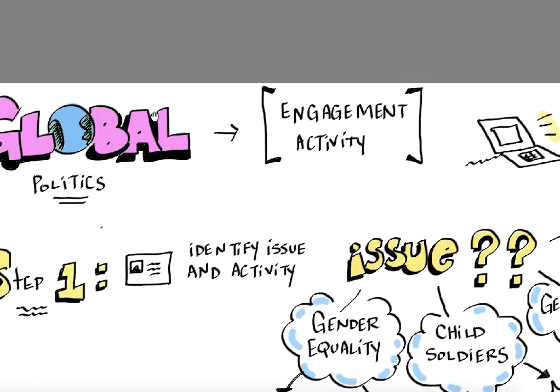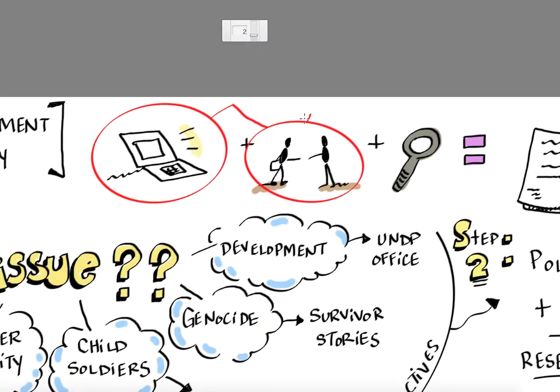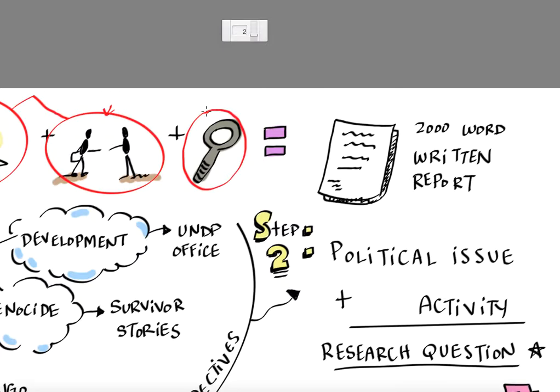Let's take a look at the engagement activity. We'll zoom in here so we can get a closer look. With the engagement activity, the purpose is for you to research and identify a political issue, using both secondary research and primary research — actually becoming involved in the research by meeting people, having interviews, and also analyzing the political issue to write a 2,000-word written report.